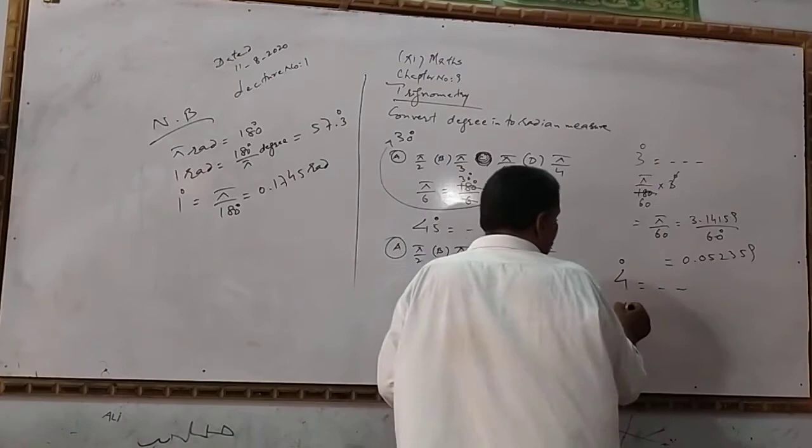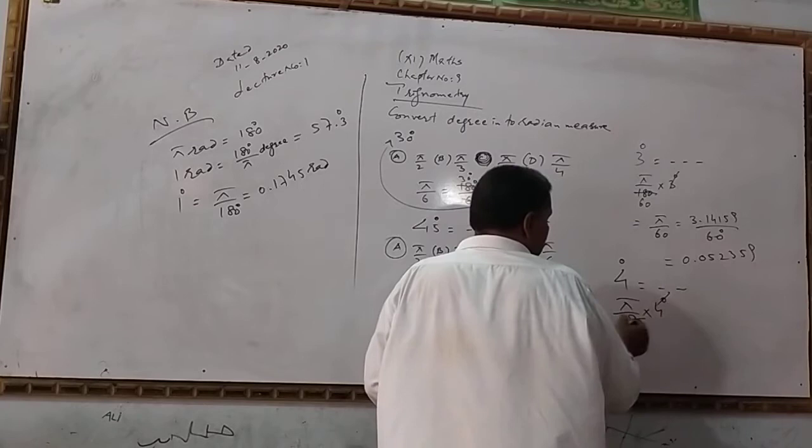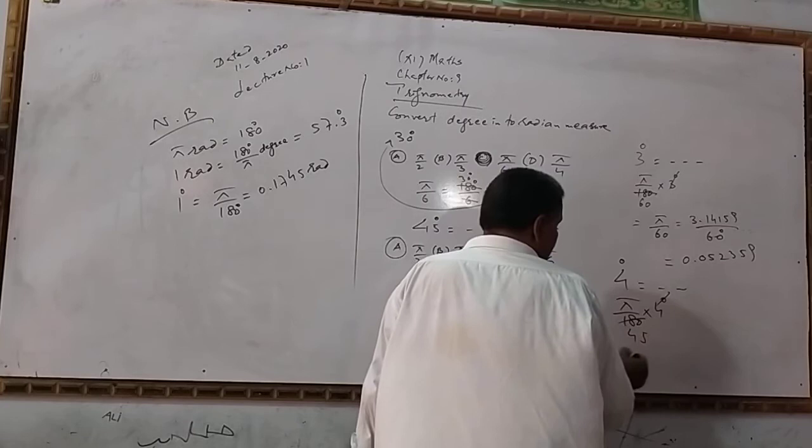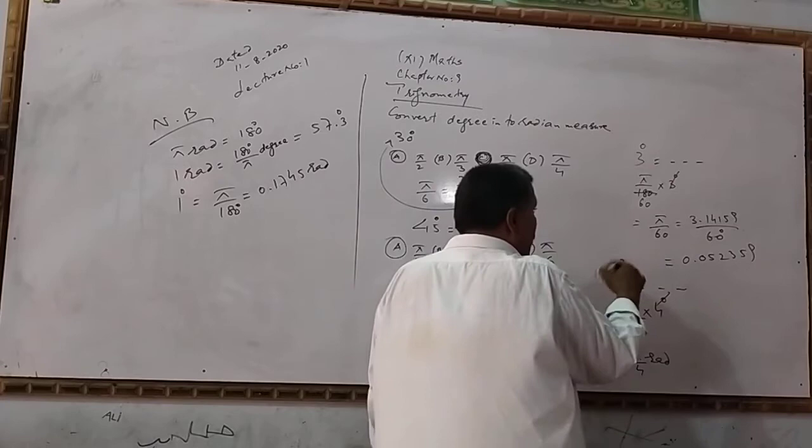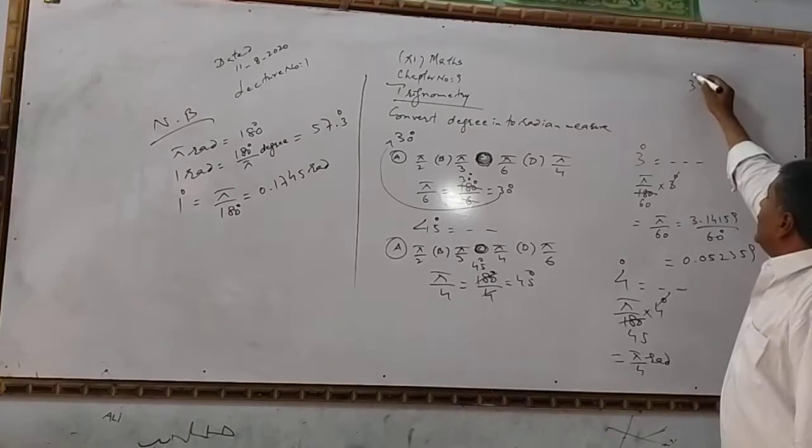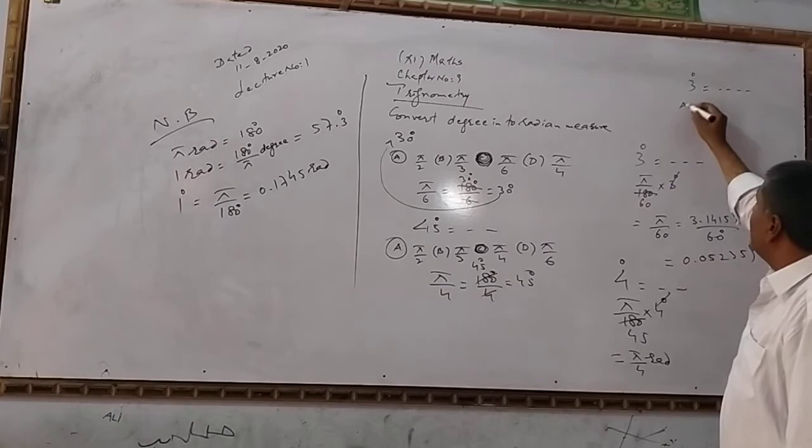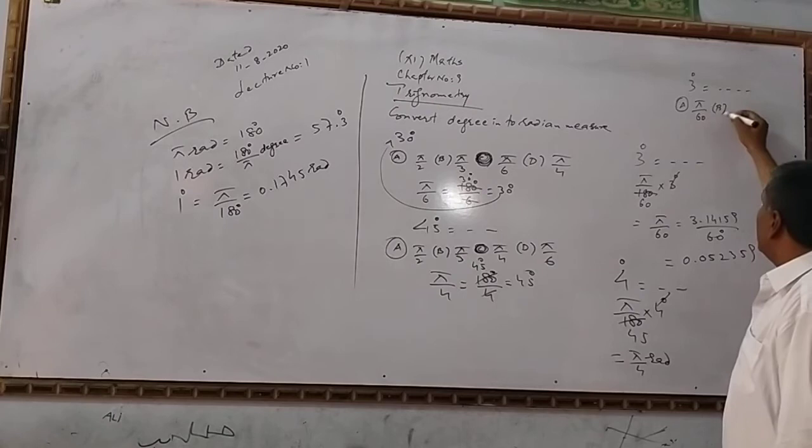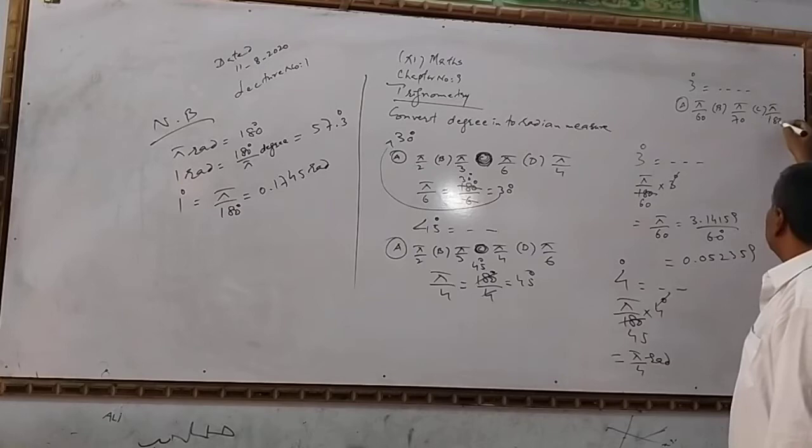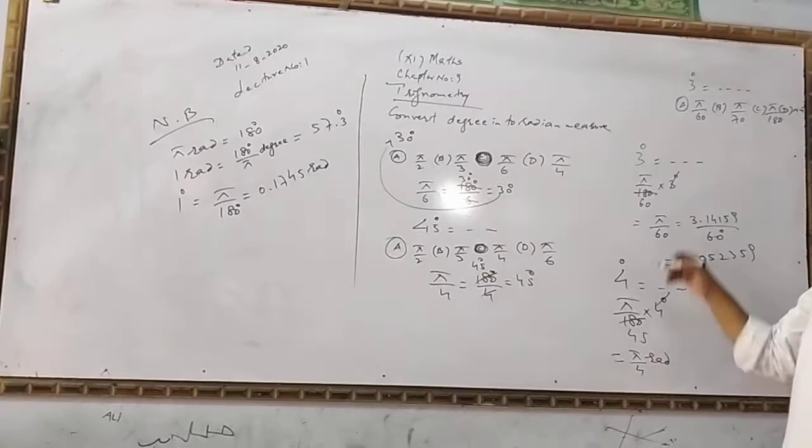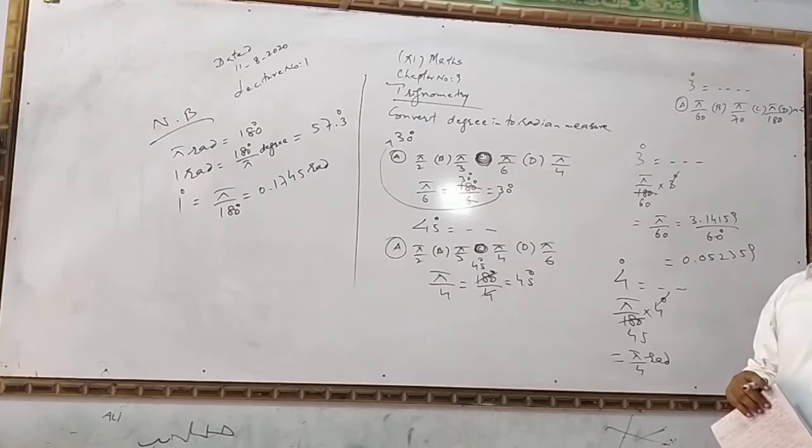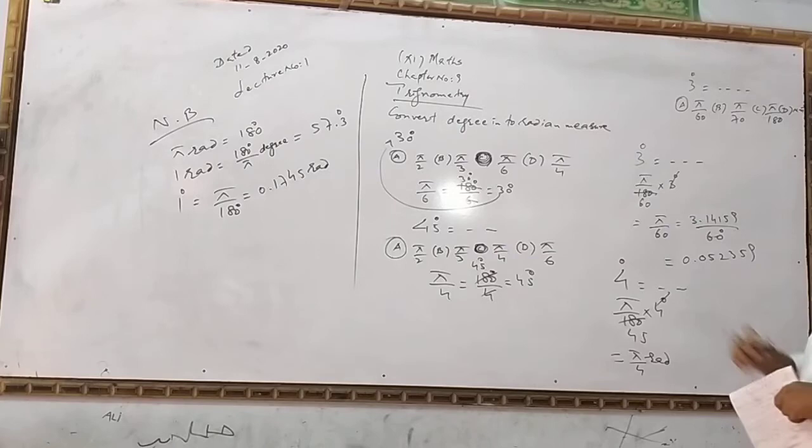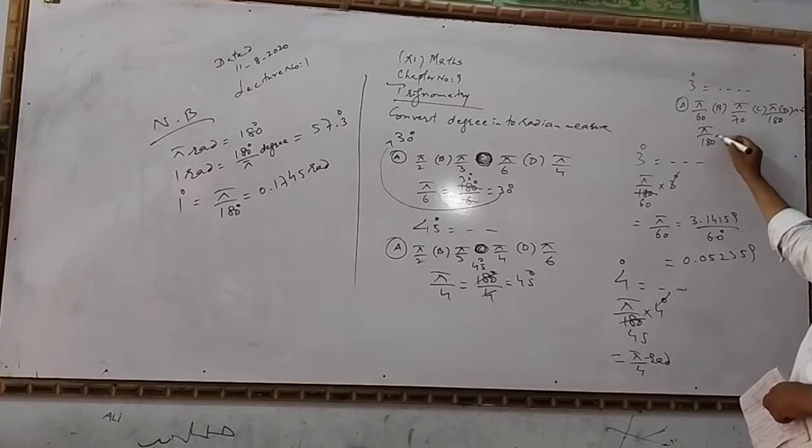The calculation process is: degrees can be converted by multiplying by π/180. The degree is the given value, and the radian is what we're finding.